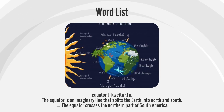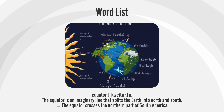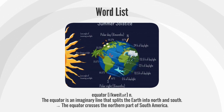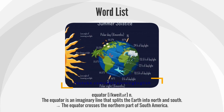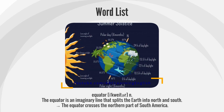Equator. The equator is an imaginary line that splits the earth into north and south. The equator crosses the northern part of South America.